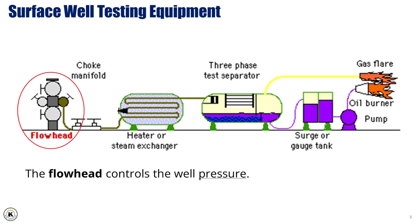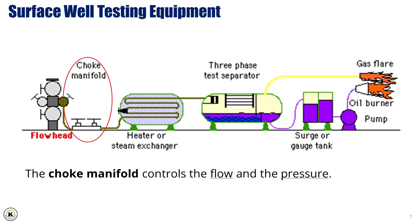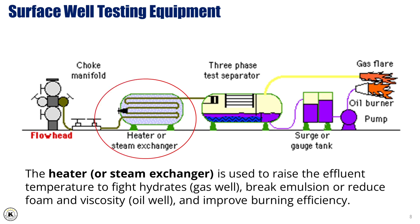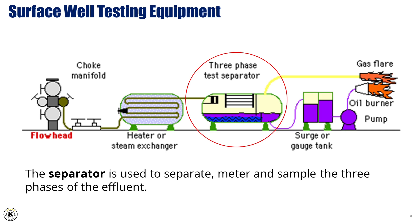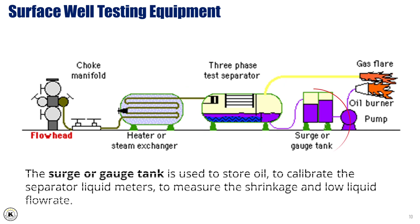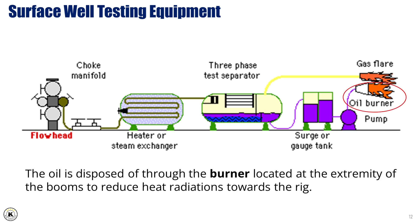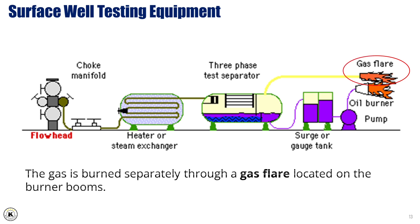The flow head controls the well pressure. The choke manifold controls the flow and the pressure. The heater or steam exchanger is used to raise the effluent temperature to fight hydrates in the case of a gas well, break emulsion or reduce foam and viscosity in the case of an oil well, and improve burning efficiency. The separator is used to separate, meter, and sample the three phases of the effluent. The surge tank or gauge tank is used to store oil, calibrate the separator liquid meters, and measure the shrinkage and low liquid flow rate. The transfer pump is used to empty the tank and to ensure proper atomization pressure for clean burning at the burner head. The oil is disposed of through the burner located at the extremity of the booms to reduce heat radiation towards the rig. The gas is burned separately through a gas flare located on the burner booms.